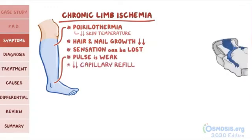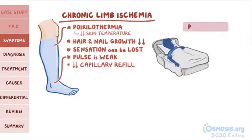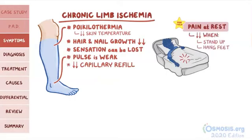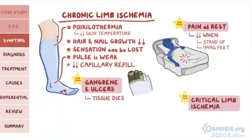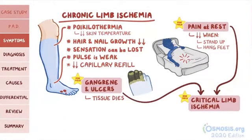As the arterial narrowing worsens, individuals begin to complain of pain at rest. This is classically worse at night when the individual is sleeping and gets better when they stand up or hang their leg off the bed due to the effect of gravity on blood flow. Eventually, the peripheral tissue dies, which manifests as gangrene and ulcers. The end-stage manifestation is critical limb ischemia, which includes pain at rest as well as tissue loss in the form of gangrenes and ulcers. Critical limb ischemia is limb-threatening if operative intervention is not performed.